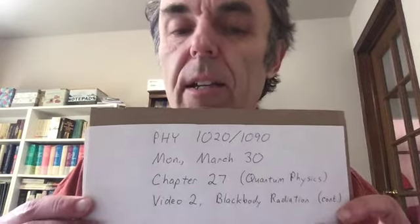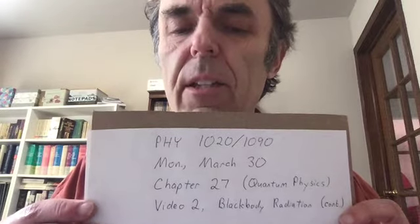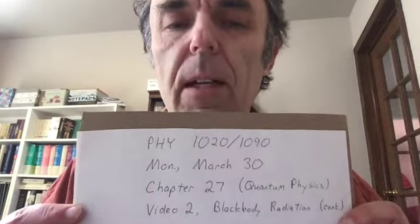This is physics 1020 and 1090, a lecture from Monday, March 30th. We are in chapter 27 on quantum physics. Here in this second video, we're going to continue our discussion about blackbody radiation.